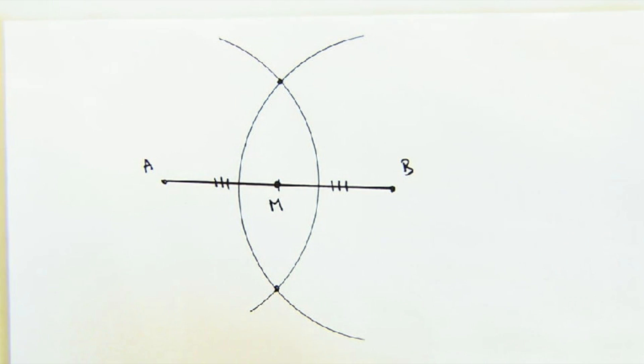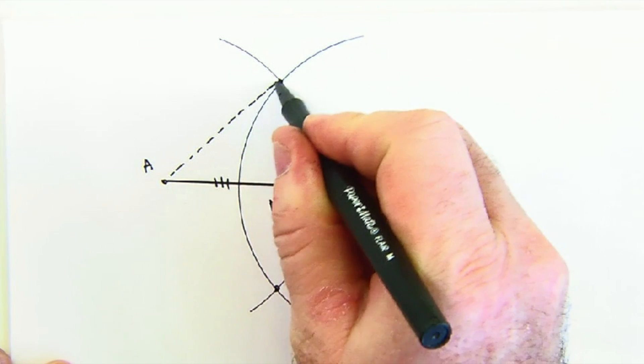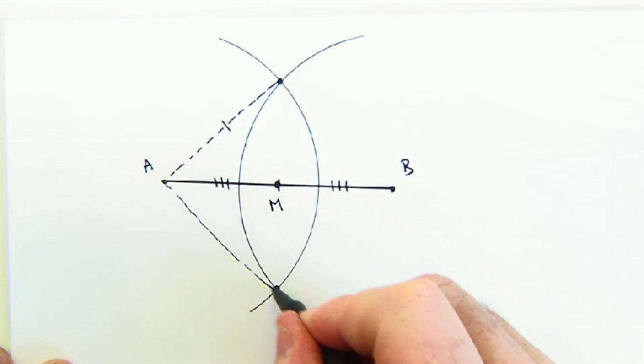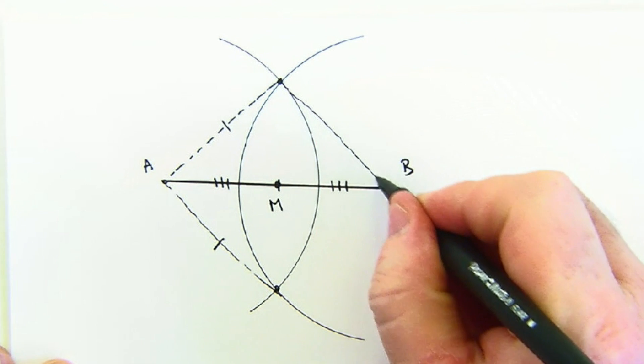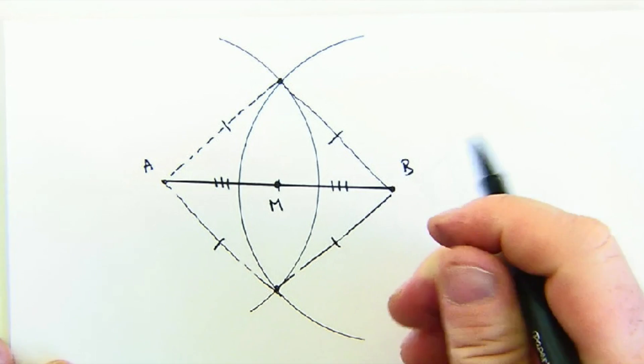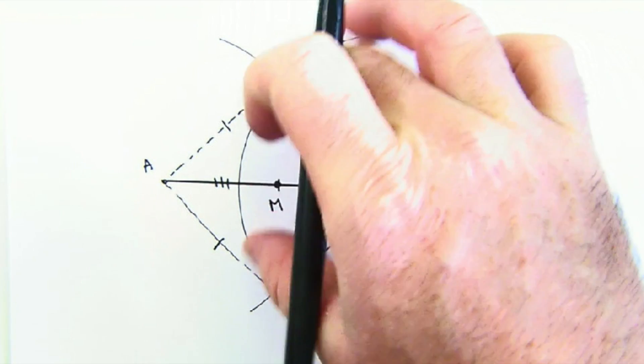Now maybe just a quick explanation why such magic works, is that the construction produces two equal lines from this location. And by keeping the compass the same, we create two equal from the other one. And so we create this beautiful symmetry, and so this is exactly in the middle.